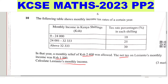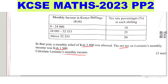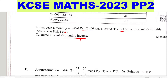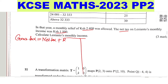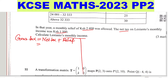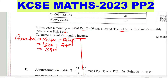Since you're moving backwards, the first thing you calculate is the gross tax. The gross tax is given by taking the net tax and adding the relief. In this case, the net tax is 1,500 and the relief is 2,400. When you add these, you get the gross tax: 3,900.